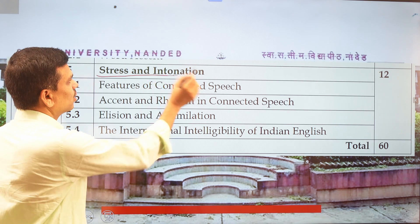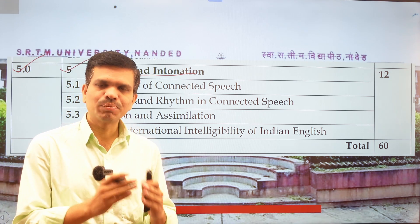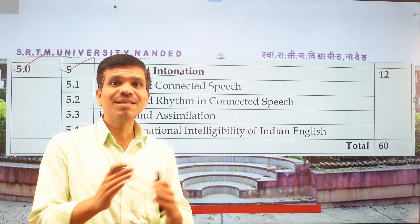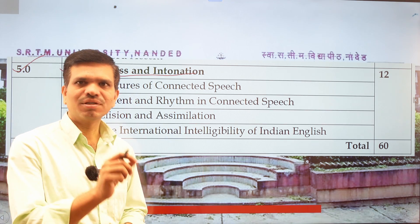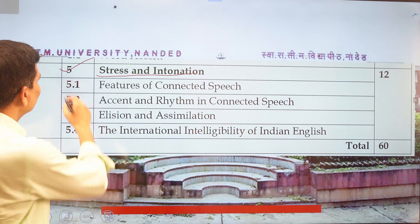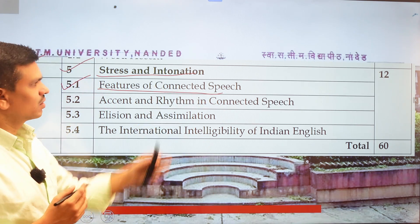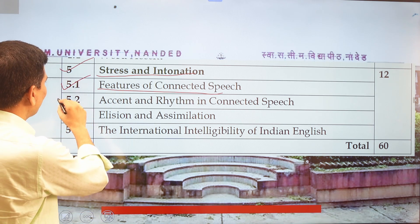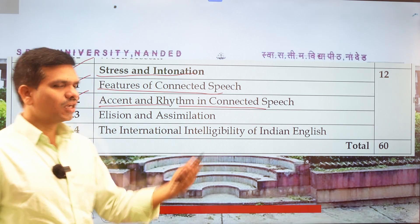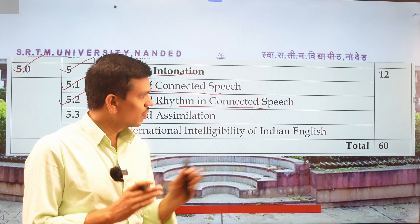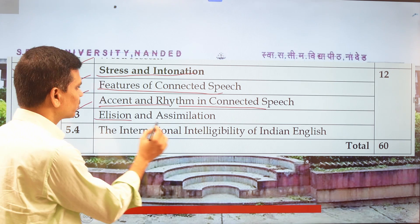The last unit — Unit 5 — covers stress and intonation, a very important part of language. We will understand how stressing a particular word changes meaning. In point 5.1 we consider features of connected speech: speech clusters and different types of speech mechanisms. In point 5.2 we cover accent and rhythm in connected speech and the qualities of connected speech.